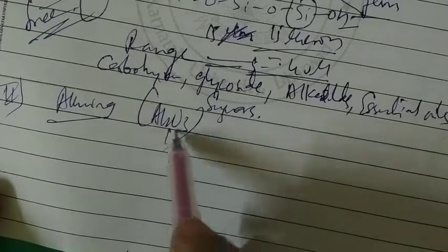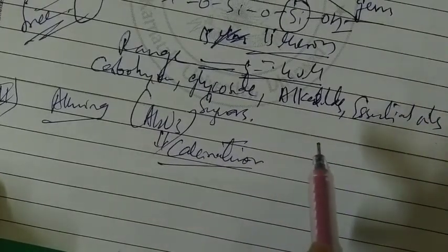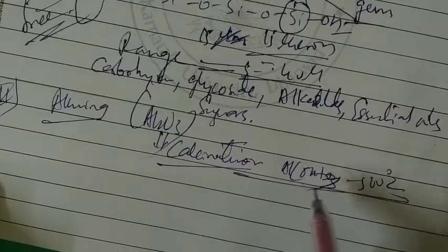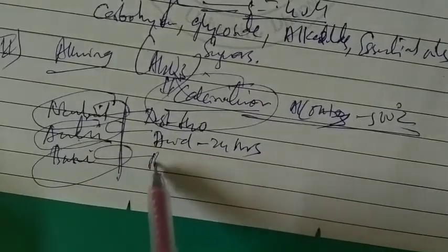The second important adsorbent is alumina, denoted as Al₂O₃ — aluminum oxide. It is prepared by calcination, a metallurgical process — by heating aluminum hydroxide Al(OH)₃ at 500°C. This alumina is of three types: neutral, acidic, and basic. For neutral alumina, treat with distilled water; for acidic, acid treatment for 24 hours; for basic, basic treatment for 24 hours.